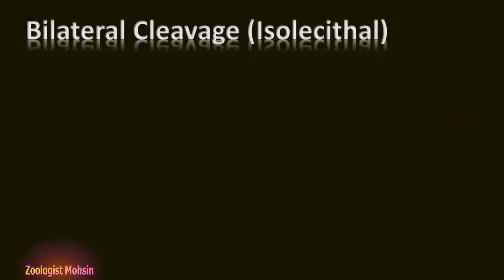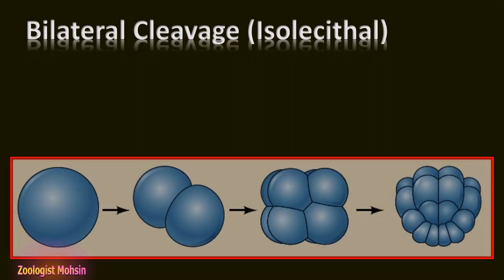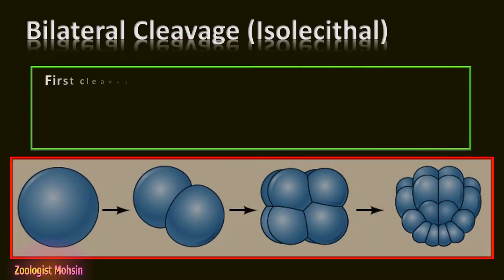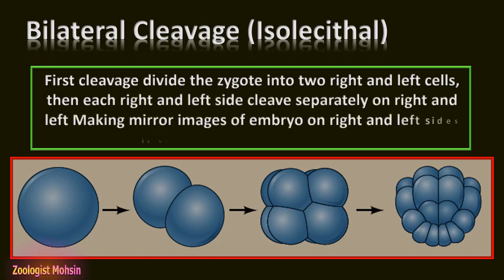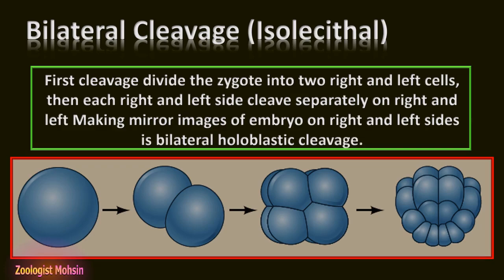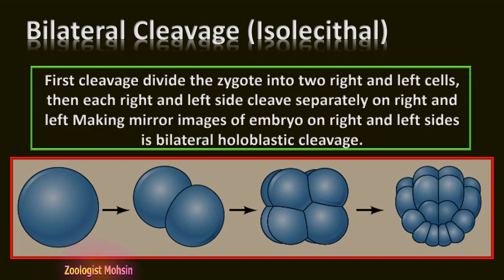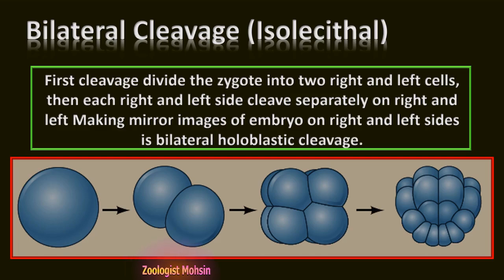Bilateral cleavage in isolecithal eggs: The first cleavage divides the zygote into two right and left cells. Then each right and left side cleaves separately, making mirror images of the embryo on both sides — this is bilateral holoblastic cleavage. The blastula is bilaterally symmetrical with two equal mirror images on both sides of the central axis. Examples include tunicates.